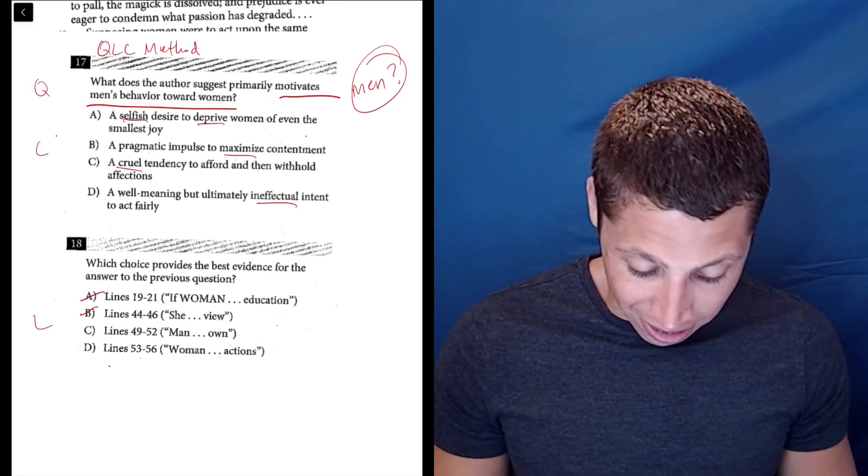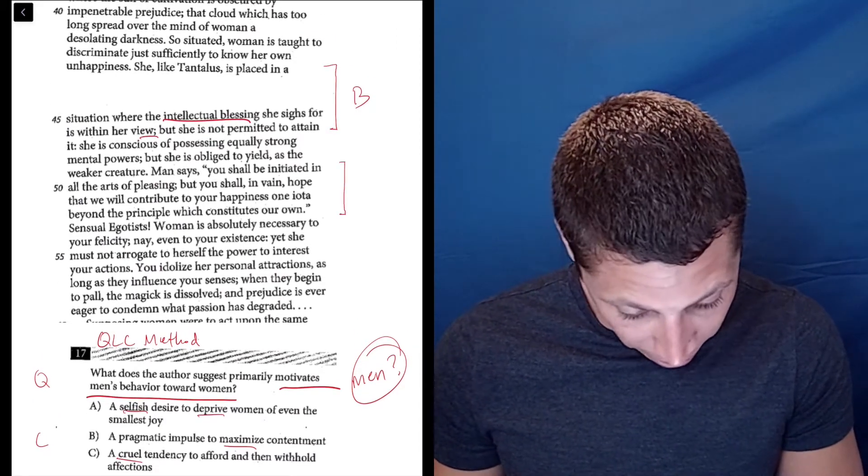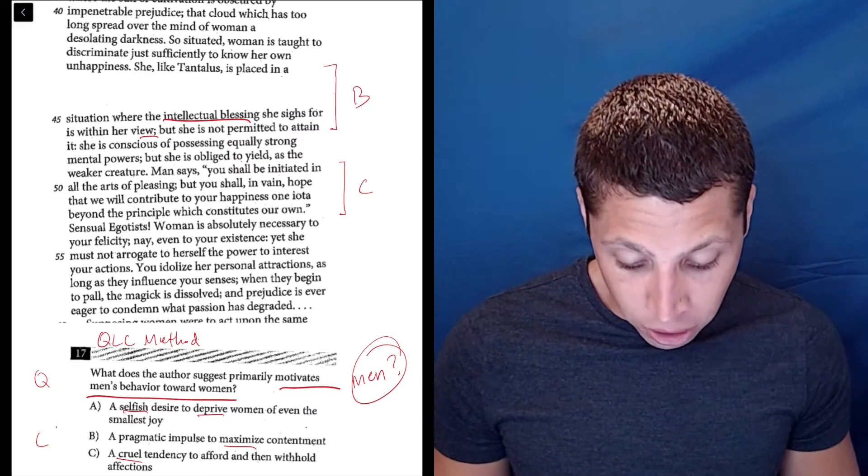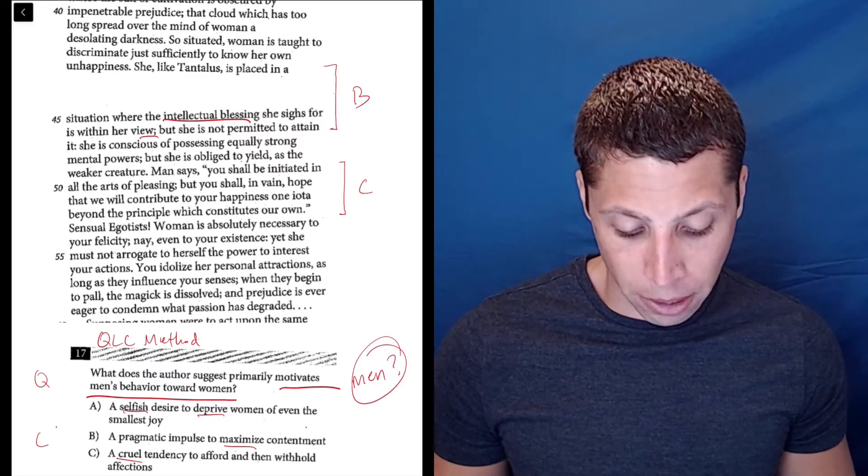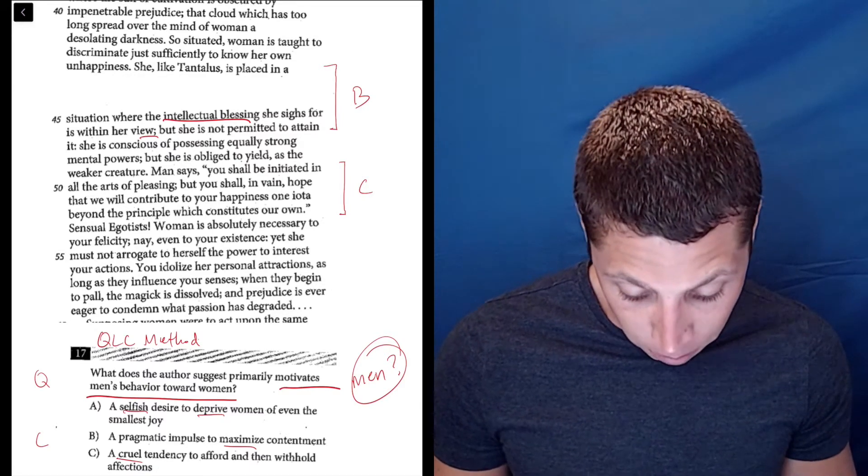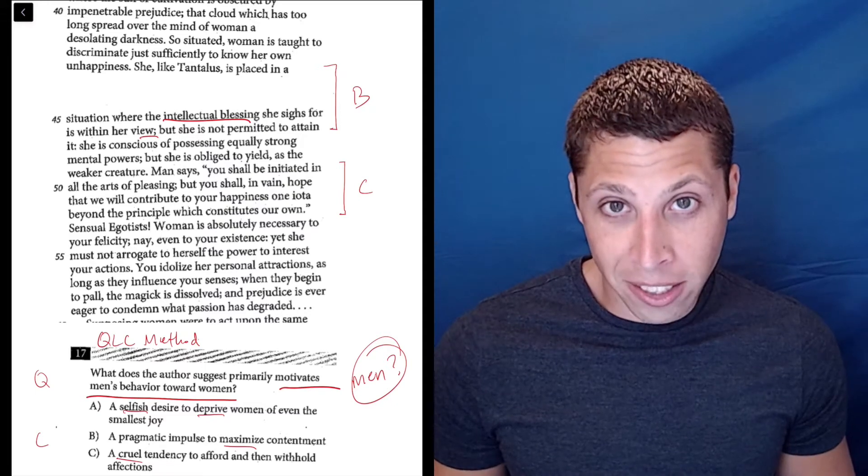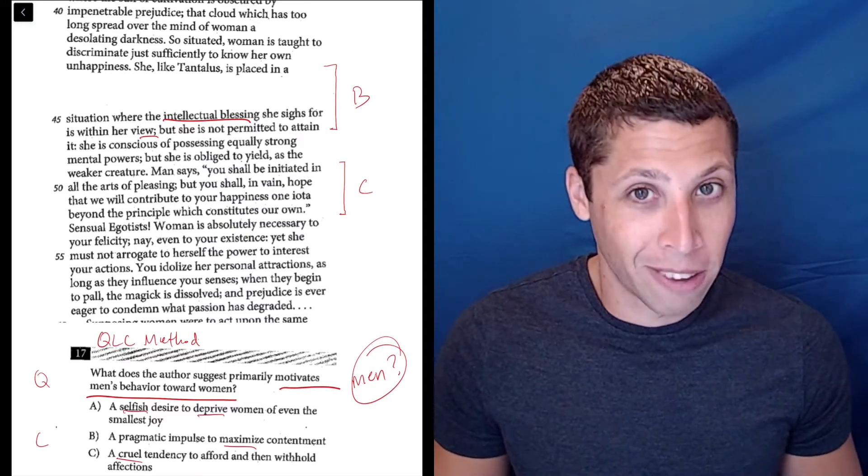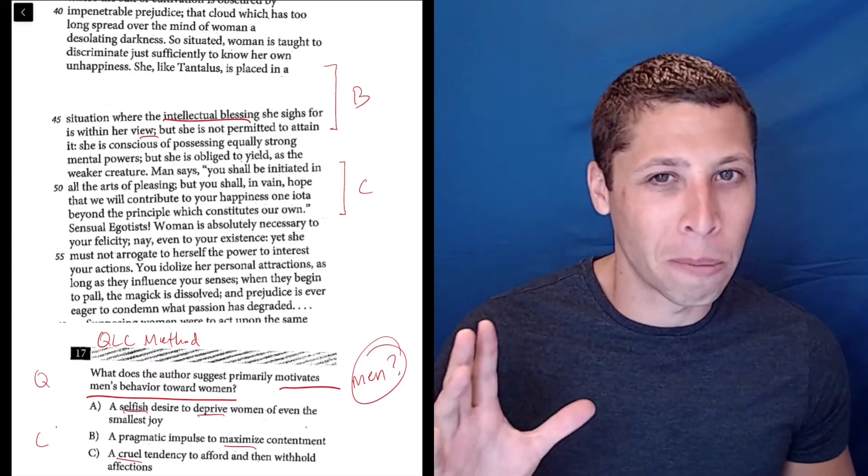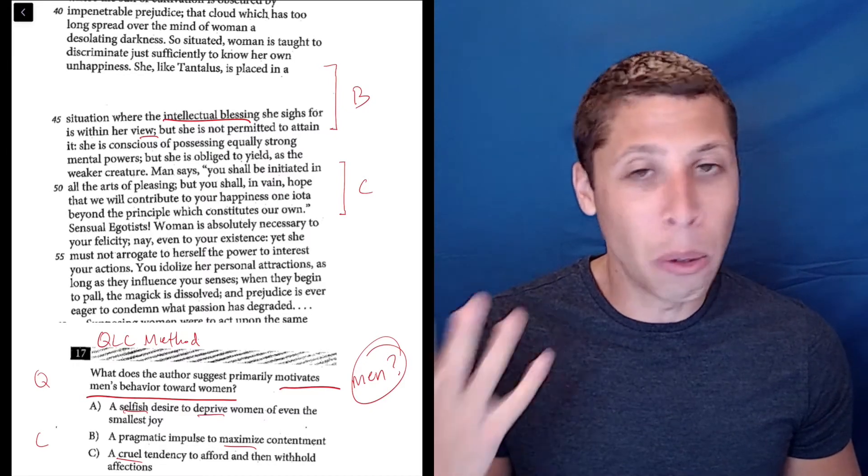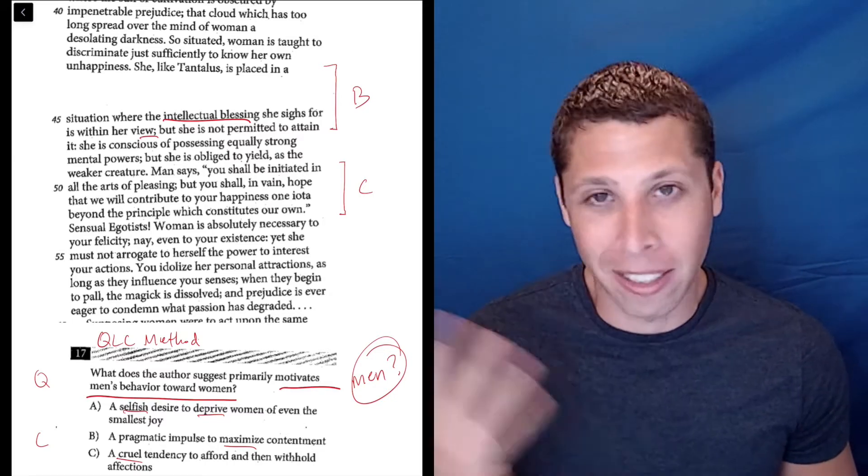Lines 49 to 52: 'Man says, you shall be initiated in all the arts of pleasing, but you shall in vain hope that we will contribute to your happiness one iota beyond the principle which constitutes our own.' Okay, so it's about men. This is a good example where let's not worry about the rest. I know it's about kind of what I need it to be about. I will worry about the rest later. My puny little brain does not immediately understand it, but I don't panic. Let's keep line reference C in the mix.